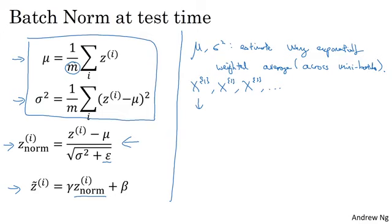So when training on x1, for that layer L, you get some mu_L. And in fact, I'm going to write this as mu for the first mini-batch and that layer. And then when you train on